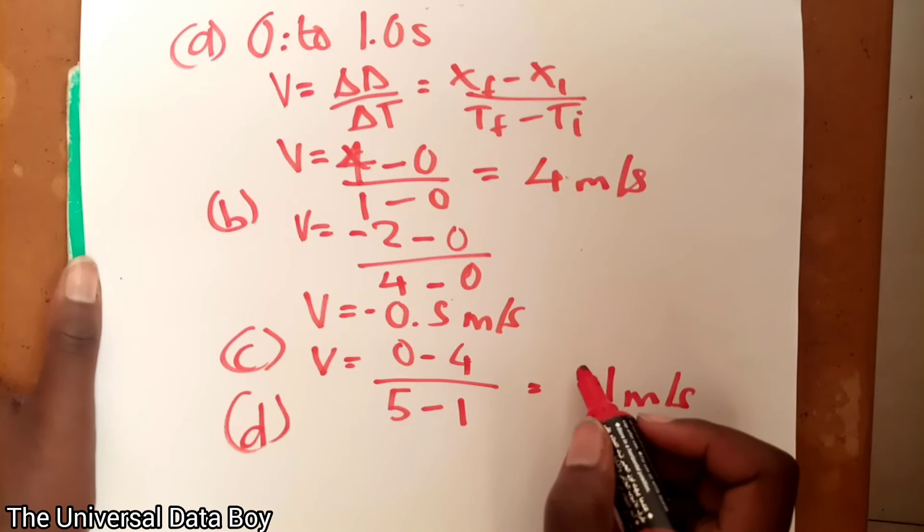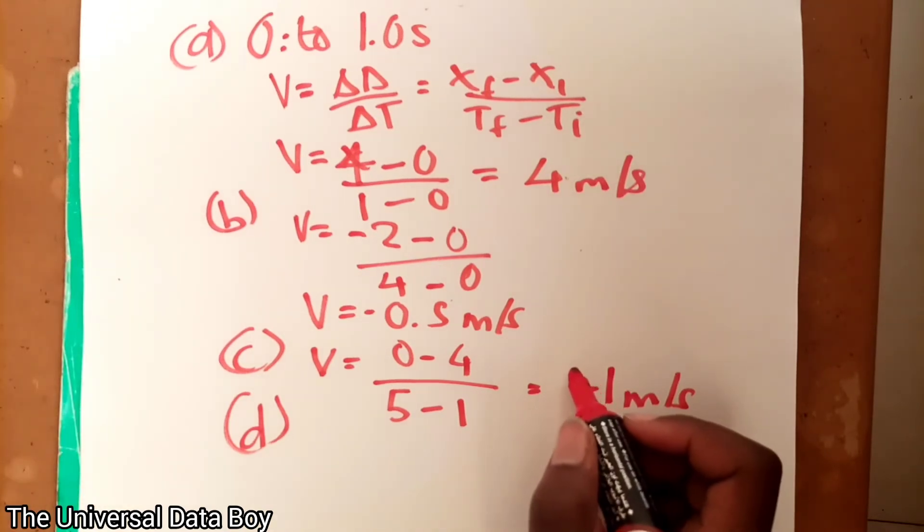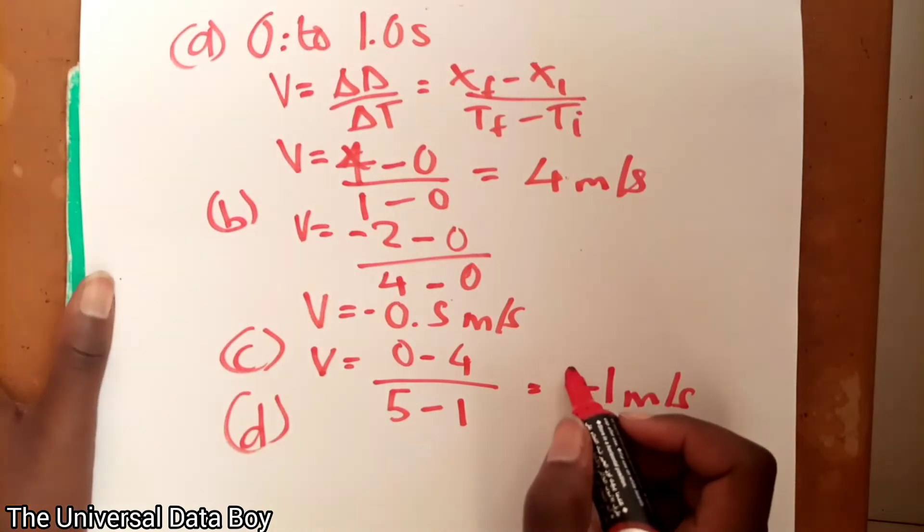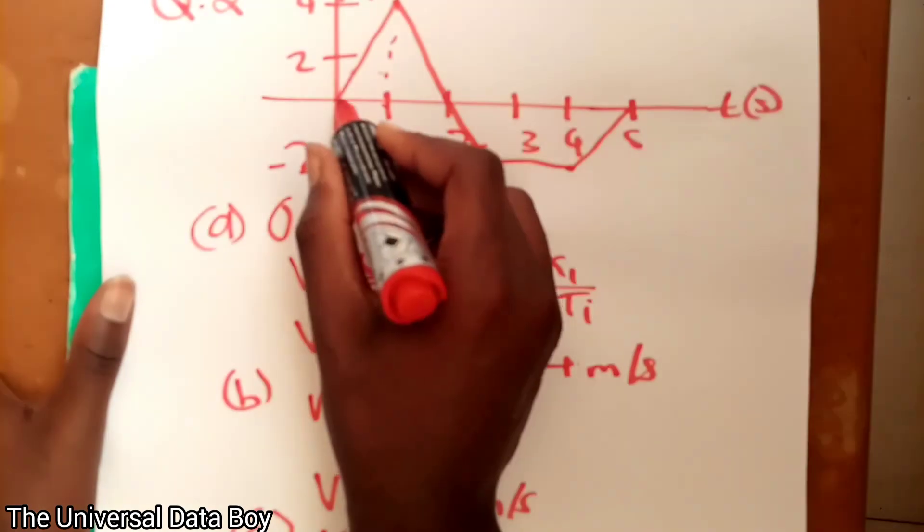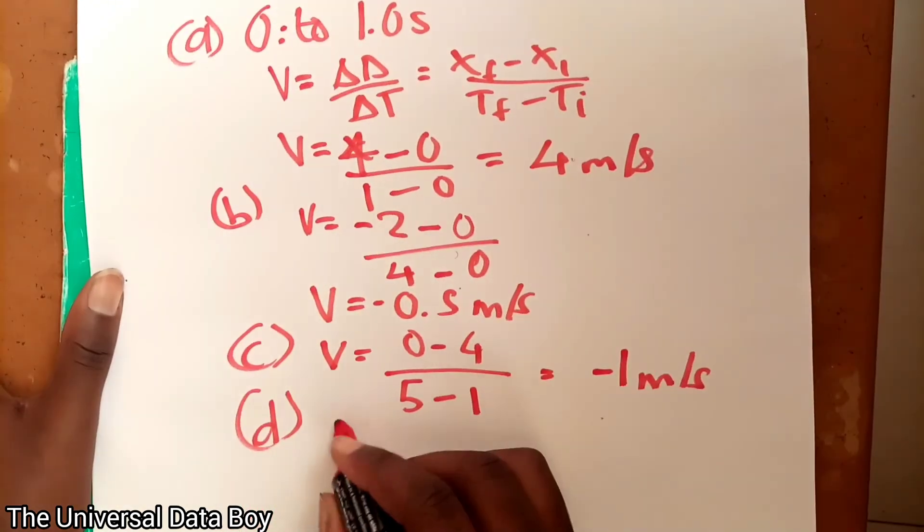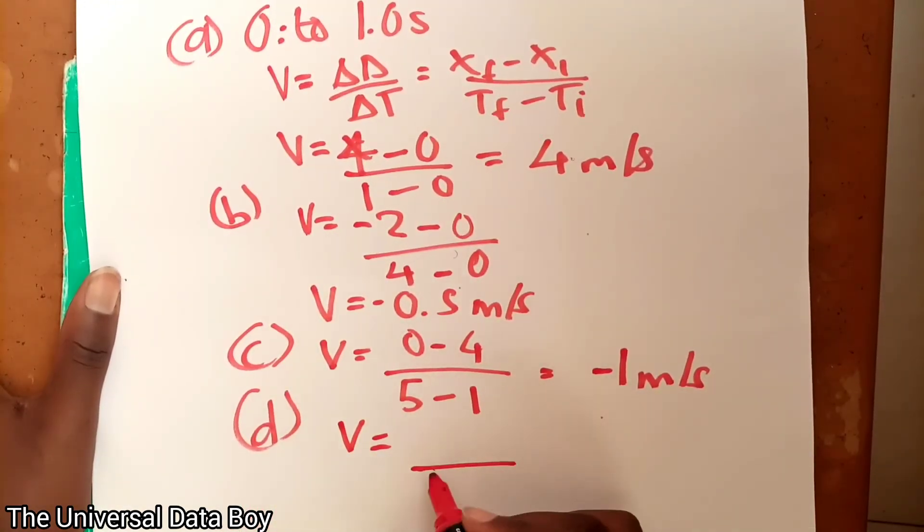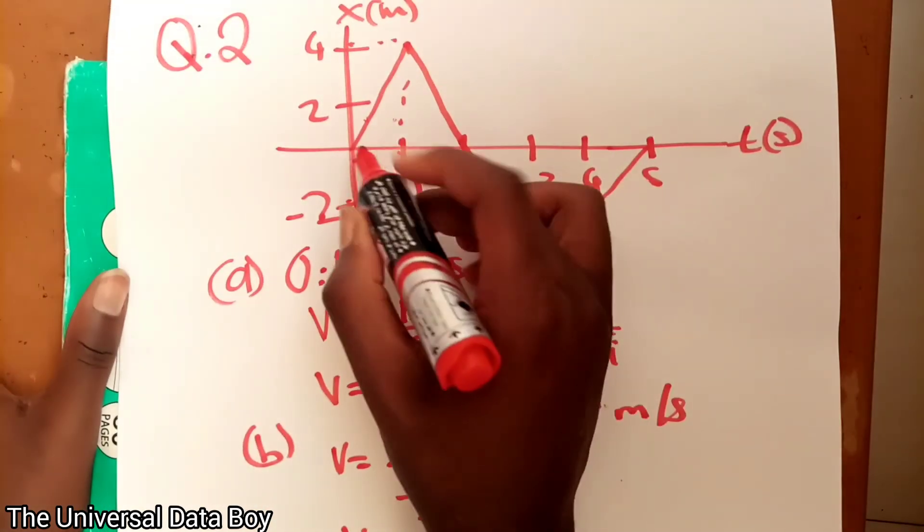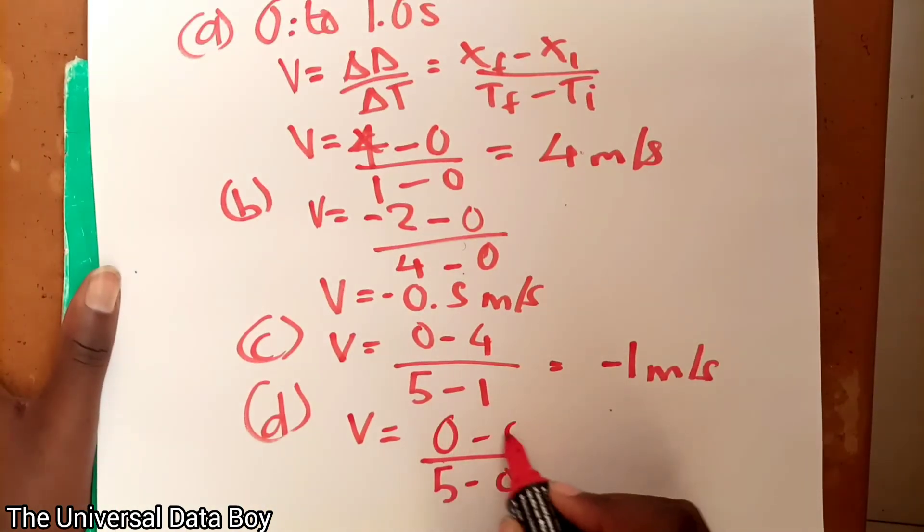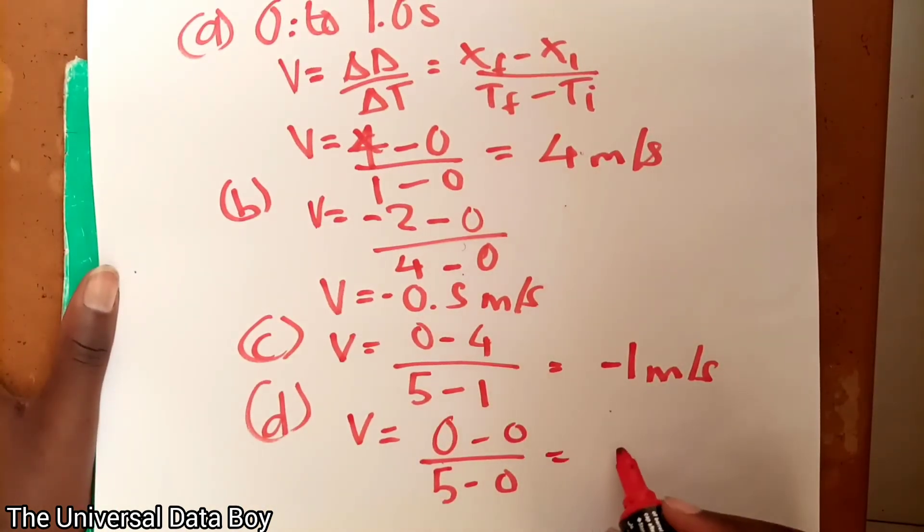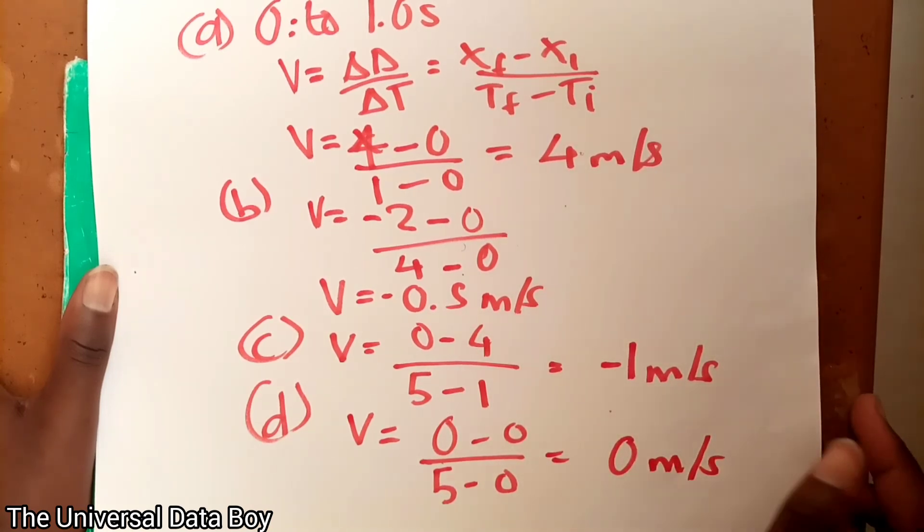D. It says from 0 to 5 seconds. So from 0 to 5 seconds, the velocity will be given by the final time is 5, the initial is 0. The final distance at 0 is 0, at 5 the distance is also 0. So having 0 minus 0 which will be 0 over 5, which will just give us 0 meters per second. And this is the average